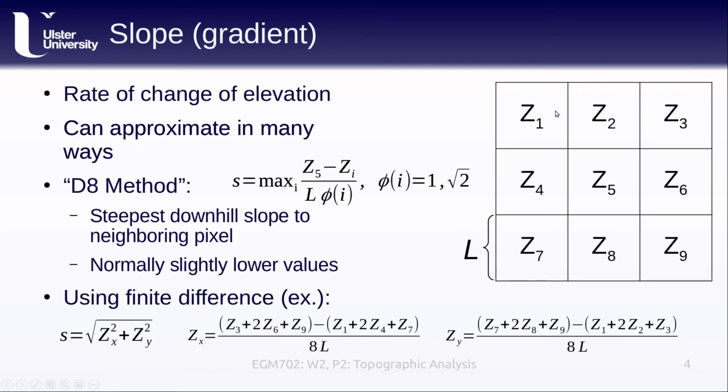This is the one that is used by ArcMap, for example. This is just taking the difference in the x direction where we average the different pixels to the right and left of our center cell. You see that there's different weights here depending on whether the cell is on the diagonal or straight across, and then we divide by eight times the length of our pixels. We have the same thing going for the y direction, and the slope is then the square root of the magnitude or the norm: the first derivative in the x direction and the first derivative in the y direction, each of these squared.